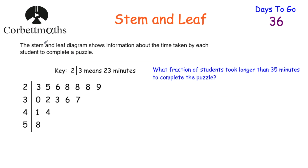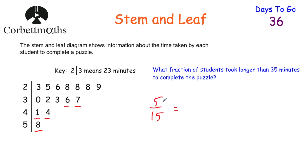Here's another one for you to try. The stem and leaf diagram shows information about the time taken by students to complete a puzzle — 2 | 3 means 23 minutes. The question says: what fraction of the students took longer than 35 minutes to complete the puzzle? Counting up all the leaves, there are 15 students altogether. Values longer than 35 minutes are: 36, 37, 41, 44, and 58 — that's 5 students. So the fraction is 5 out of 15, which cancels down to one third. If you got one third, well done.